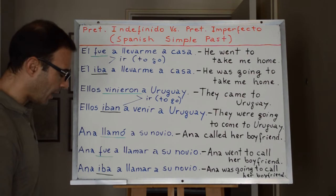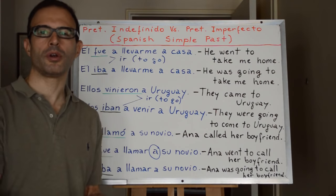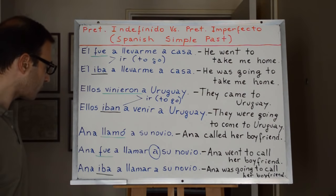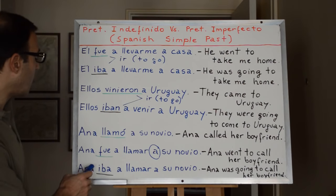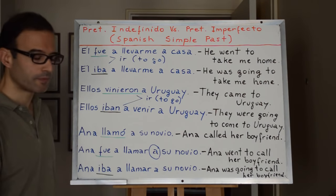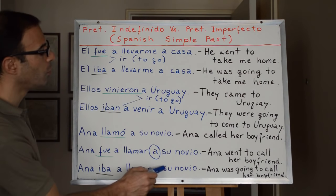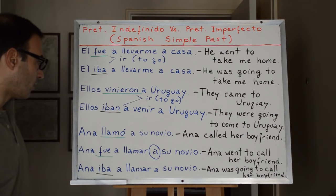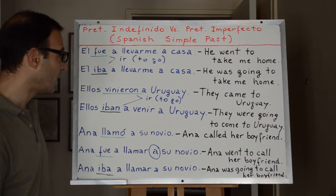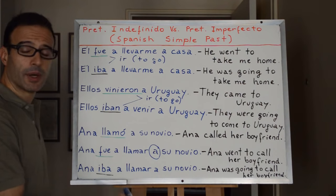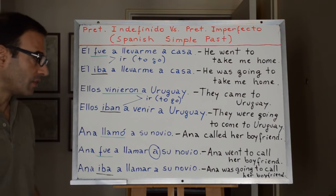In Spanish you add the preposition a, so the structure would be Ana went to call to her boyfriend — that's the function of the preposition a. Now instead of using pretérito indefinido, let's use pretérito imperfecto and see how it changes. Ana iba a llamar a su novio — Ana was going to call her boyfriend. By using pretérito imperfecto it suggests that whatever we are talking about may have not happened, whereas pretérito indefinido suggests that it did happen.